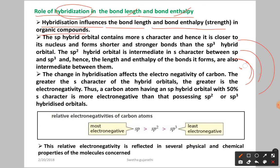In an atom, the S orbital is very close to the nucleus, then P, then D, then F. Once the S character percentage is more, it means it is more close to the nucleus. The SP hybrid orbitals contain more S character and hence are closer to the nucleus, forming shorter and stronger bonds than the SP3 hybrid orbitals.